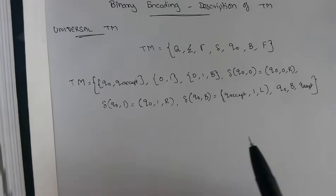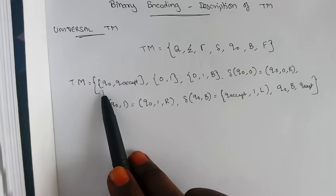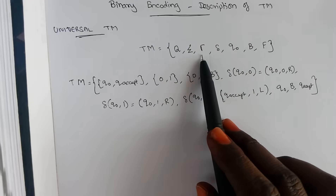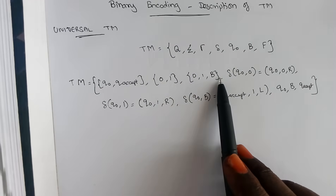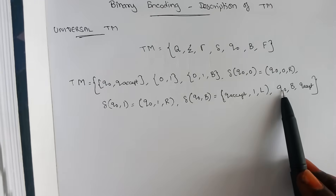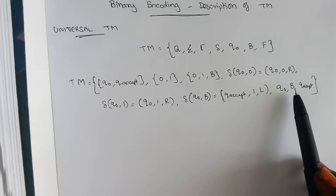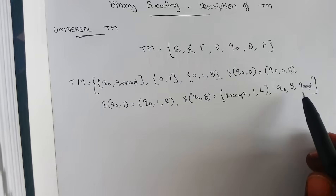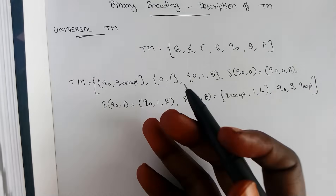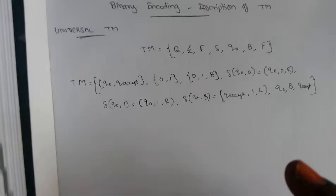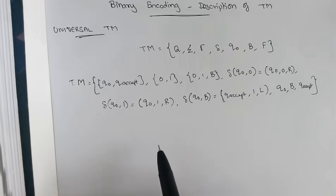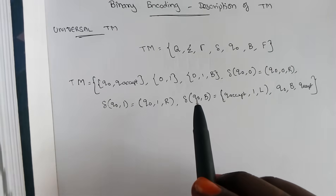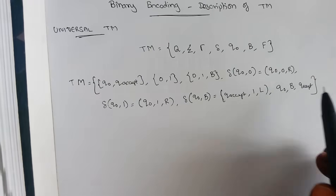Let us consider an example. Here q0 and q_accept are the set of states. The input symbols are 0 and 1, and the elements written on the tape are 0, 1, and blank. The transitions are given, q0 is the starting state, b is the representation used for blank, and q_accept is the accepting state — that is your final state. Now we are going to convert this to an encoded format, which is a very simple one.